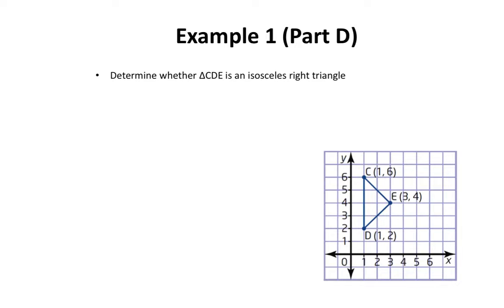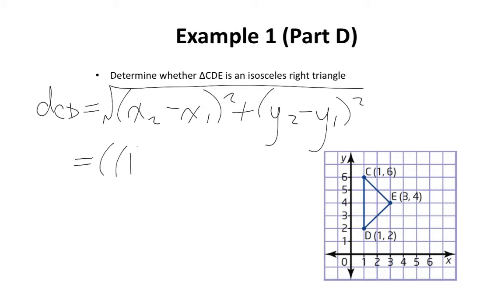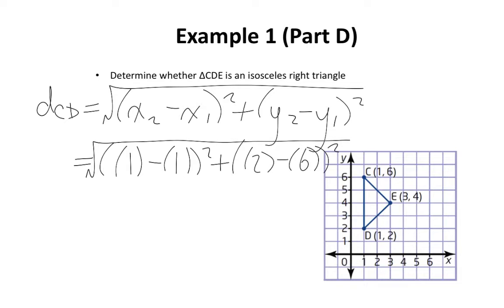And just for good measure, I'm also going to figure out the length of side CD. We sub in our known values: instead of x2 I write 1, instead of x1 I write 1, instead of y2 I write 2, and instead of y1 I write 6. You can do the calculations on your own, but you should get a value of 4 units.